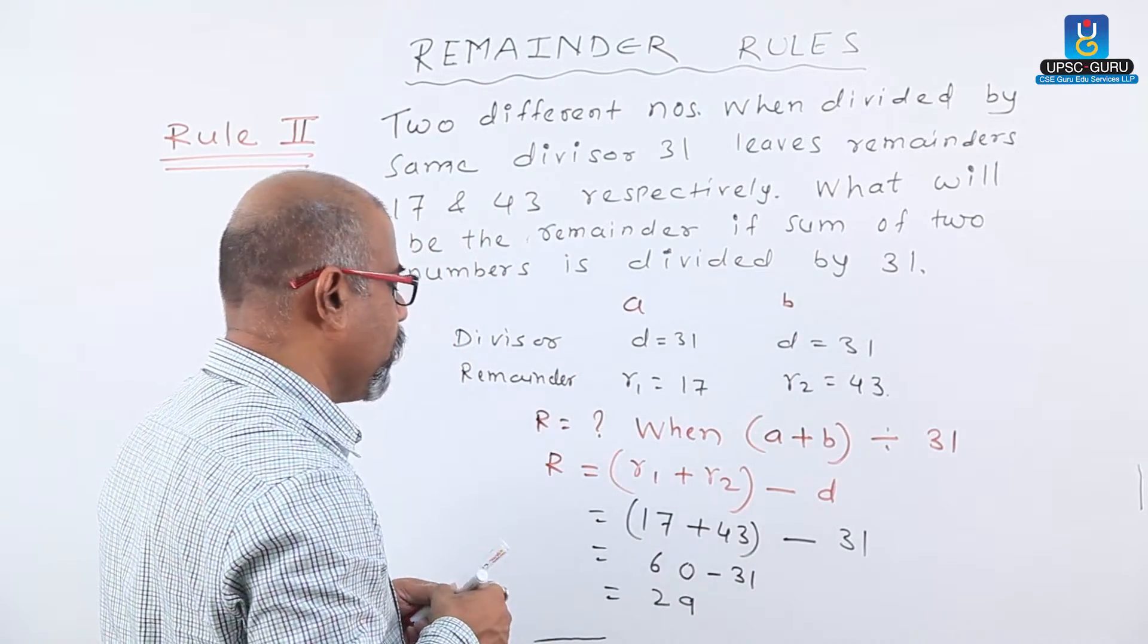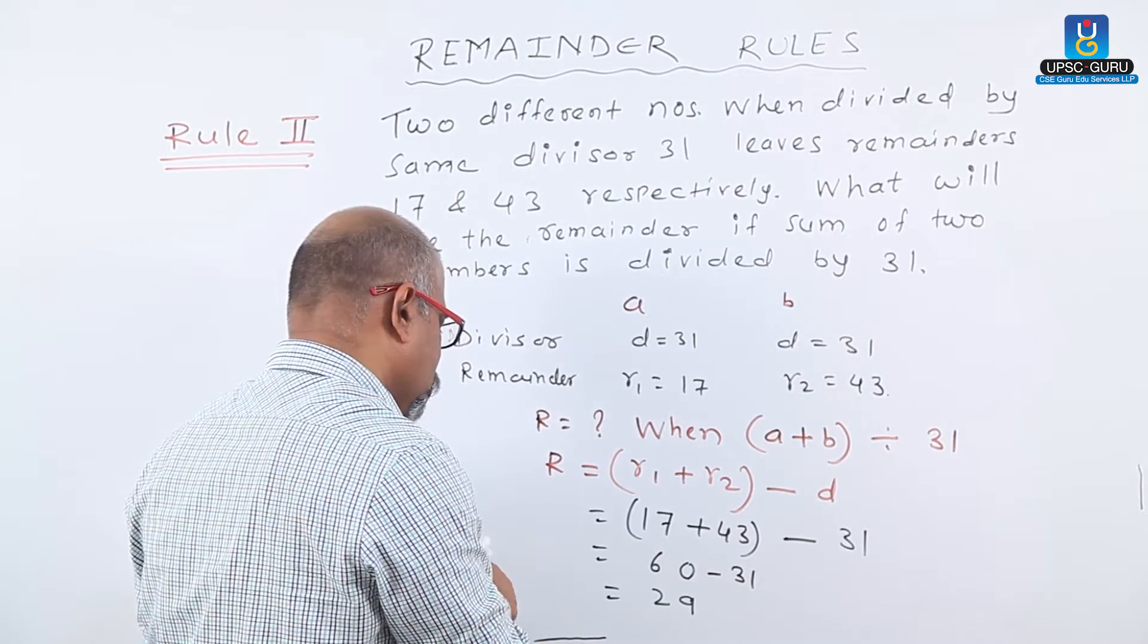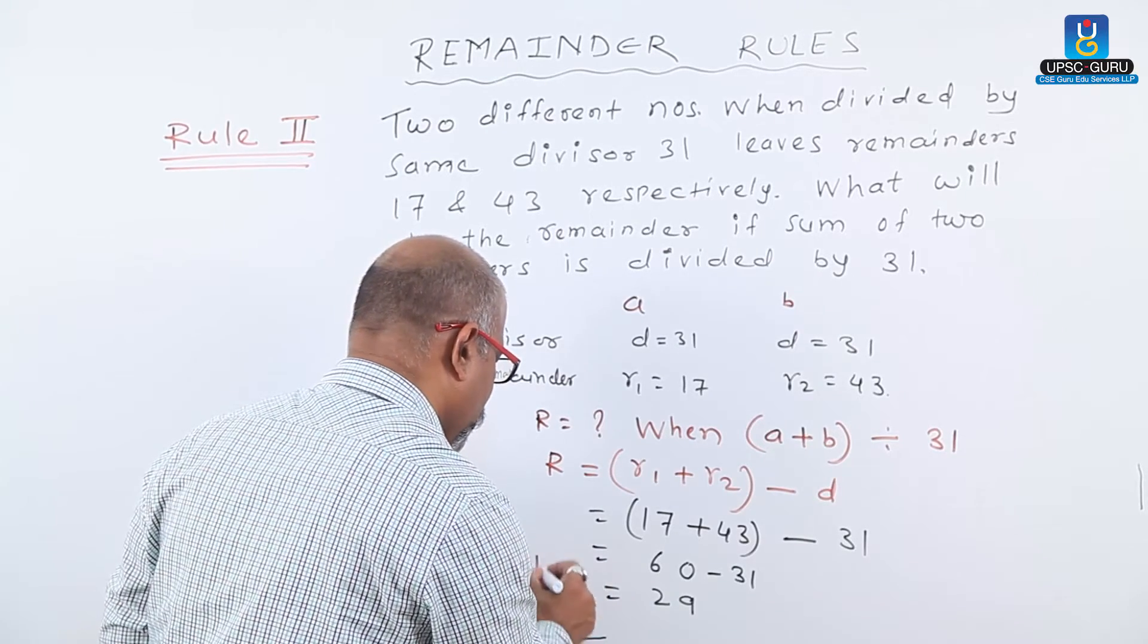Therefore, the required remainder R equals 29.